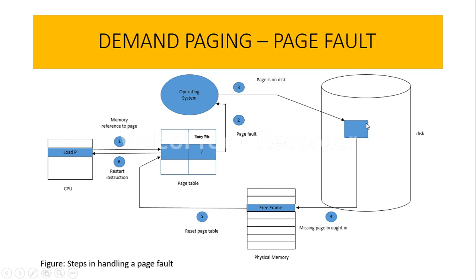The operating system checks for the required page on the disk, and once it is found, the missing page is brought into the physical memory. Once the missing page is brought into physical memory, the immediate thing we do is reset the page table — that means we change the status of the page table entry to a valid bit, indicating the requested page is now loaded onto physical memory.